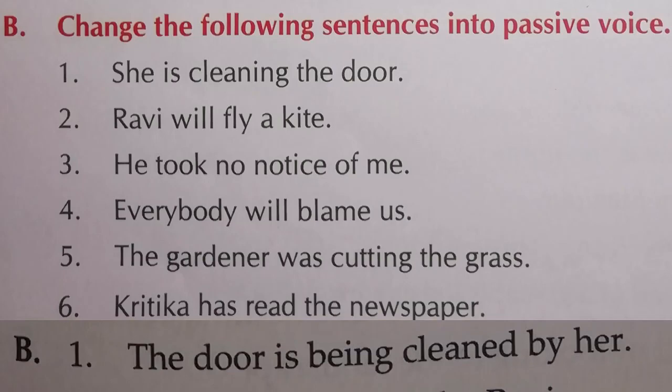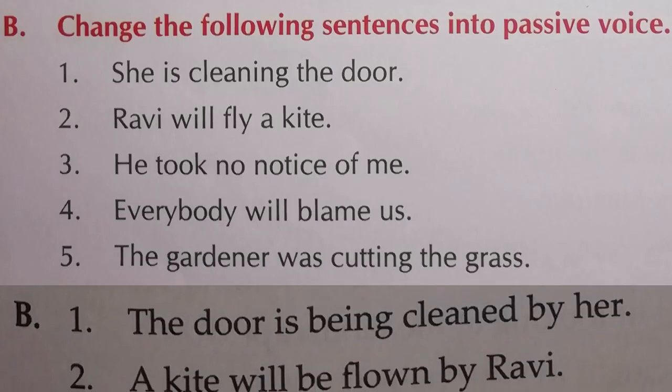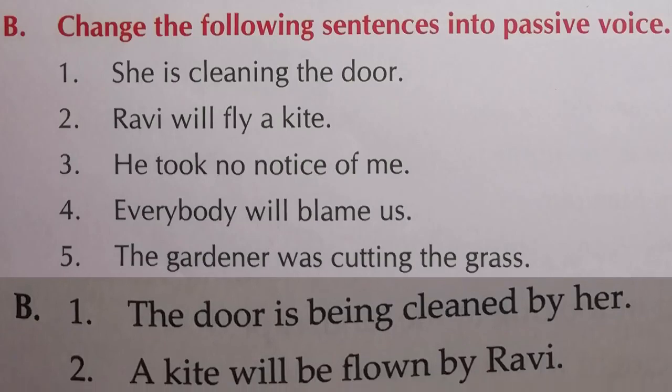It's very simple. Now see the second: 'Ravi will fly a kite.' Again, 'a kite' comes to the first place as subject, and 'by Ravi' goes to the last place in the form of object. 'Will fly' means it is future tense — as I told you, 'will be' is used in future. Answer: 'A kite will be flown by Ravi.'